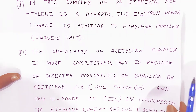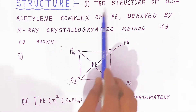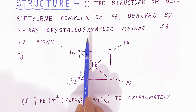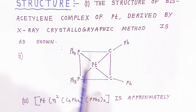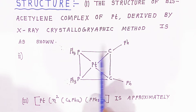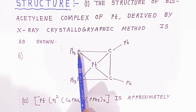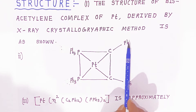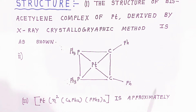Now we will look at the structure. The structure of the bis acetylene complex of platinum, derived by X-ray crystallography, is shown. It is called bis triphenyl phosphine diphenyl acetylene platinum complex. Platinum is at the center, and since it is a square planar complex, at two corners there are triphenyl phosphine groups, and at the other two corners there is diphenyl acetylene.